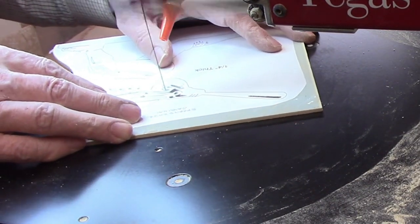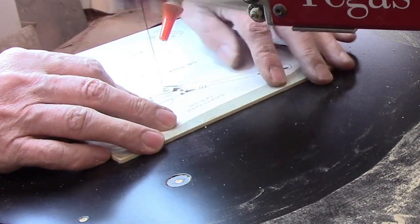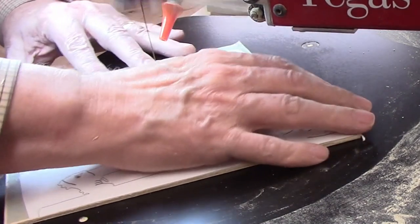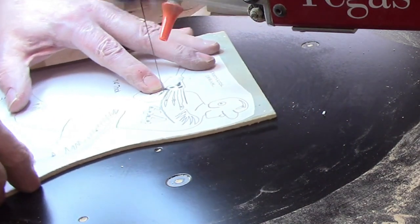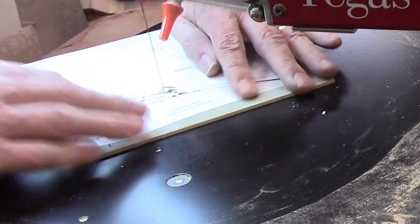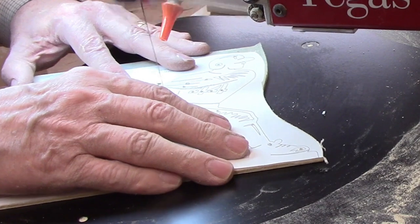Basswood is very soft, so the cut was somewhat aggressive even with a number three blade and the saw running at its slowest speed. With my experience, I could control the workpiece, but if you are less experienced, I recommend using quarter inch material and possibly a smaller blade than a number three if you have one on hand.